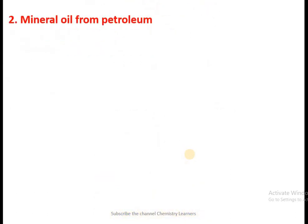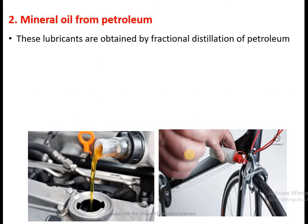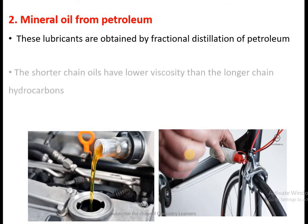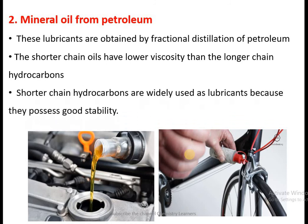The second type of liquid lubricant is mineral oils from petroleum. With the help of petroleum fractions, these mineral oils are obtained. They can be used as engine oil, brake oil, or lubricants between brakes and different chains. These lubricants are obtained by fractional distillation of petroleum products. Shorter chain oils have lower viscosity than longer chain hydrocarbons, and shorter chain hydrocarbons are widely used as lubricants because they possess good stability.